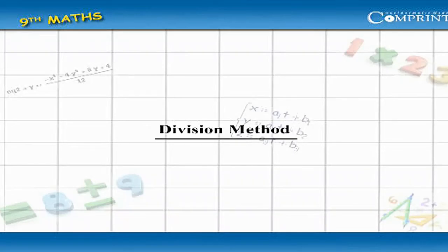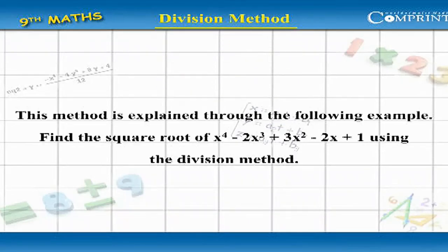Division Method. This method is explained through the following example: Find the square root of x to the power of 4 minus 2x cubed plus 3x squared minus 2x plus 1, using the division method.